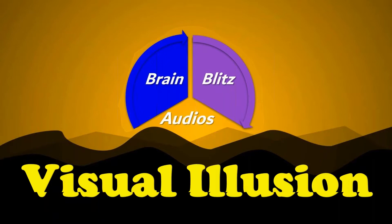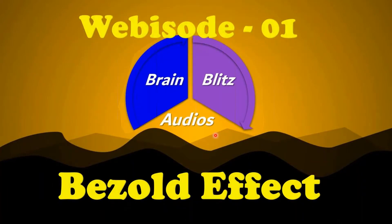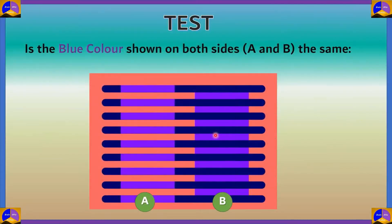Prepare to be amazed! Today is all about the Bezold effect. Here's a test: you've seen this figure and it has these parallel lines with blue in them in both column A and column B. Your job is to figure out — is the blue color shown on both sides, A and B, different or the same?